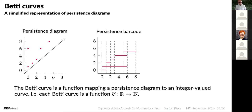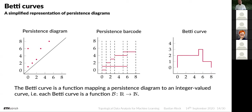These representations — persistence diagram and barcode — are interchangeable. Once you have the barcode representation, you look at how many intervals are alive (intersections) at every threshold, and graph this number. That gives you the Betti curve. Moving through the thresholds on the X axis: at threshold zero we have two intervals alive, at threshold one perhaps two again as one ends and another begins, and so on.